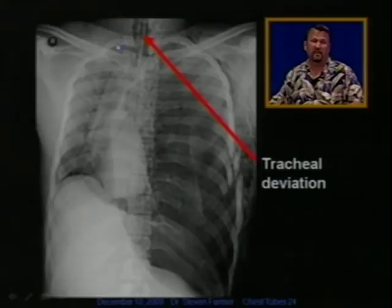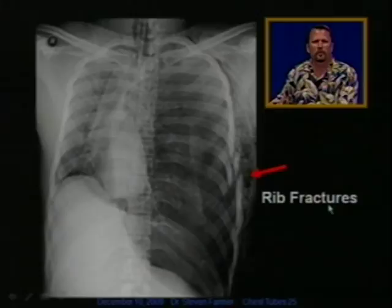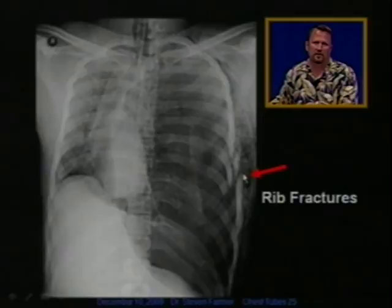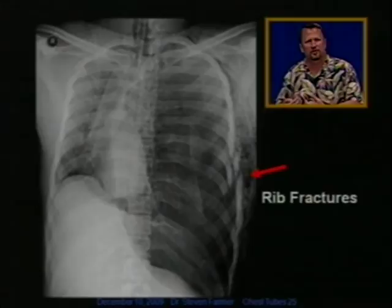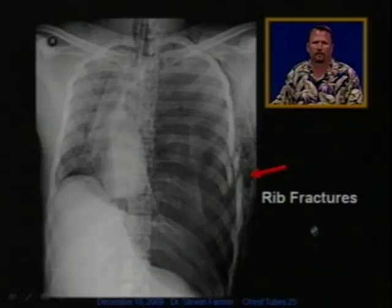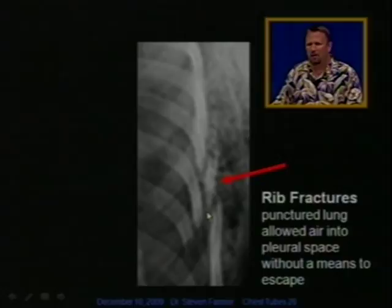Tracheal deviation is something you can see from across the room if you have good eyes. This tension pneumothorax was caused by rib fractures — if you look at this X-ray carefully, you can see broken ribs. These broken ribs have punctured the lung and put air into the pleural space, but the air has nowhere to go. Every time the patient inhales, they compress more air into that pleural space. So a lot of times, tension pneumothoraxes are caused by rib fractures, which you can see on the X-ray blow-up.